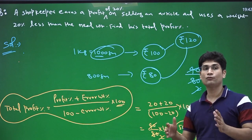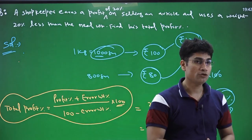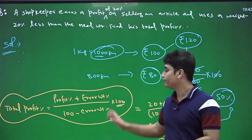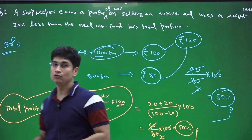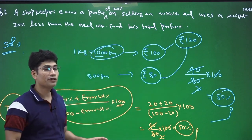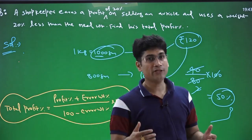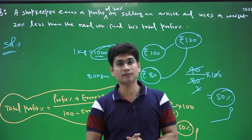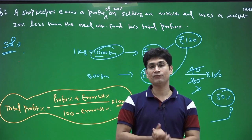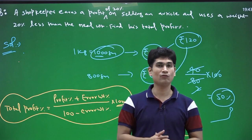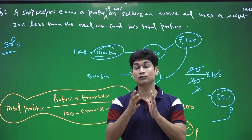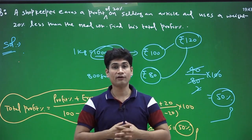That's the last question for today. Tomorrow we'll discuss a few more questions from profit and loss, then move to a new topic — likely ratio and proportion or time and work. Thank you so much. If you have doubts, come to the doubt session and you'll get your PDF afterwards.